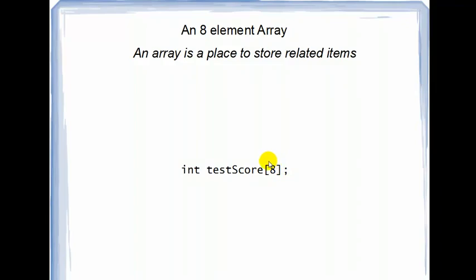And then in brackets here, you have how many elements you want that array to contain. So this says, make me an array, map out an area of memory where I can store eight integers.